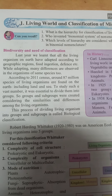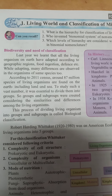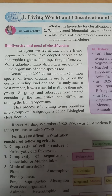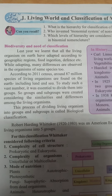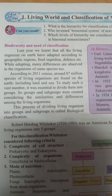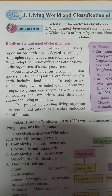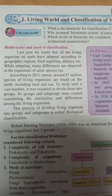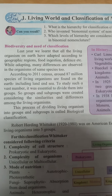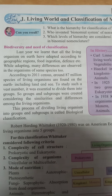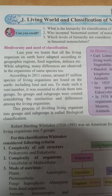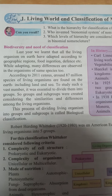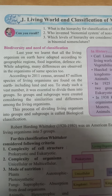According to the 2011 census, around 87 million species of living organisms are found on the earth, including land and sea. To study such a vast number, it was essential to divide them into groups. There is a variety of organisms, and since it is so vast, we can study them by classifying all organisms into a variety of categories.